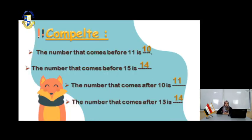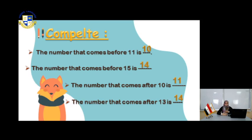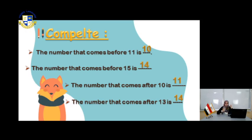Let's complete this page. The number that comes before 11 — you have 11, what is the number before 11? Count: 1, 2, 3, 4, 5, 6, 7, 8, 9, 10, 11. So what is before 11? It's 10.